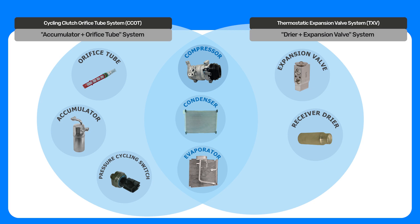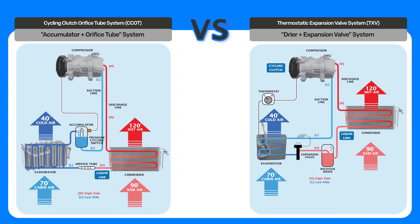On an expansion valve system, you have a thermostat with a probe that makes contact with the evaporator. Newer systems have a thermistor, which does basically the same function. When the evaporator gets to a certain temperature, it'll cycle the compressor off to keep the evaporator from freezing up.